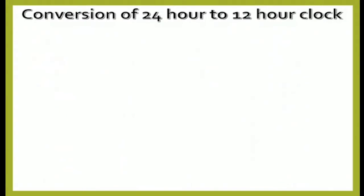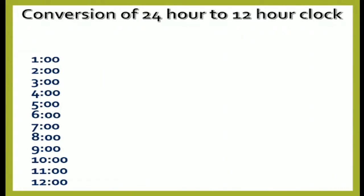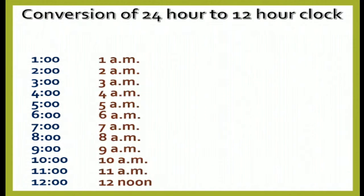Now let's see how to convert 24-hour clock to 12-hour clock. In 24-hour clock we don't write AM or PM, but in 12-hour clock we write AM or PM. So 1 hour as 1 AM, 2 hours as 2 AM, 3 hours as 3 AM, 4 hours as 4 AM, 5 hours as 5 AM, 6 hours as 6 AM, 7 hours as 7 AM, 8 hours as 8 AM, 9 hours as 9 AM, 10 hours as 10 AM, 11 hours as 11 AM, and 12 hours as 12 noon.